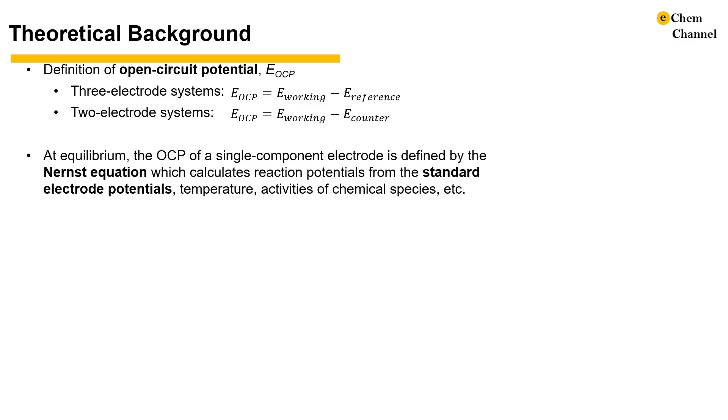The OCP of a single component electrode at equilibrium is defined by the Nernst equation. Nernst equation calculates reaction potentials from standard electrode potentials, temperature, activities of chemical species, and a few other parameters. You can look up standard electrode potentials online. If the reaction involves less common compounds, you can estimate the standard electrode potential by the division of Gibbs free energy of formation by the Faraday's constant and the number of electrons transferred during the reaction.